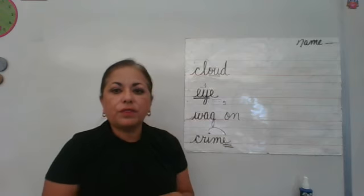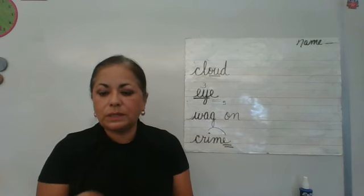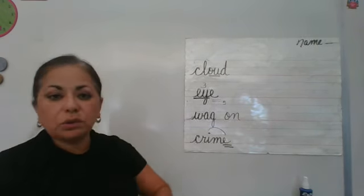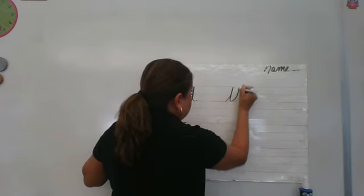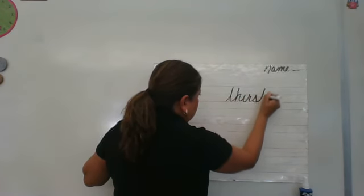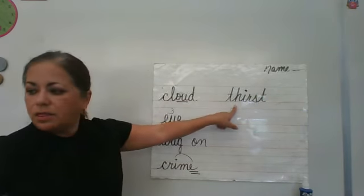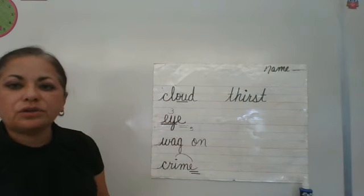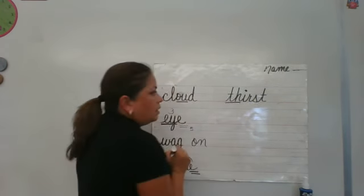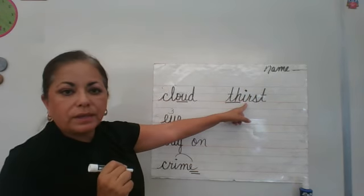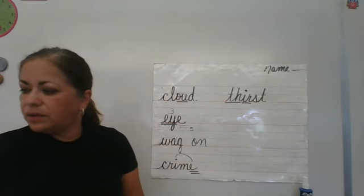The next word is thirst. Working in the sun makes you thirst for water. Thirst, one syllable. You have two multiletter phonograms in this word. Thirst, it's the first one. Underline it. The second multiletter phonogram is E-R as in thirst. And there is nothing else to mark.